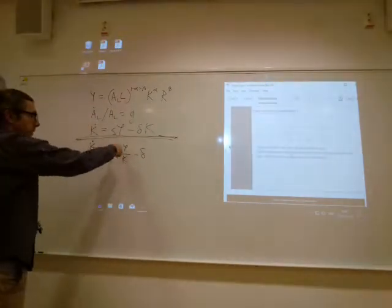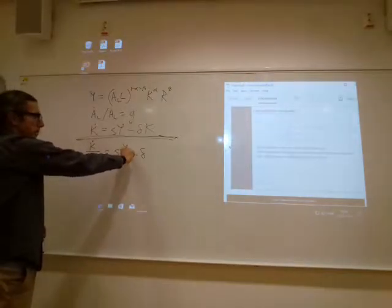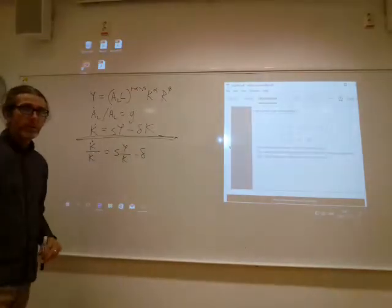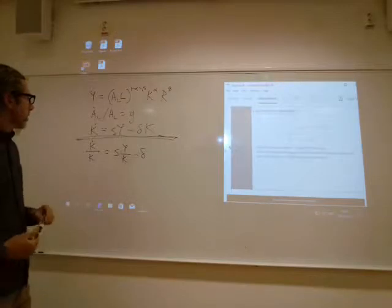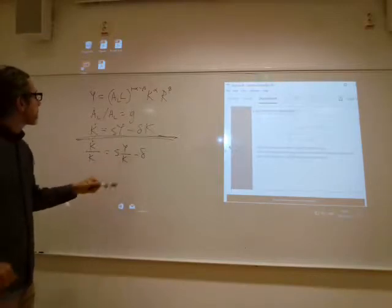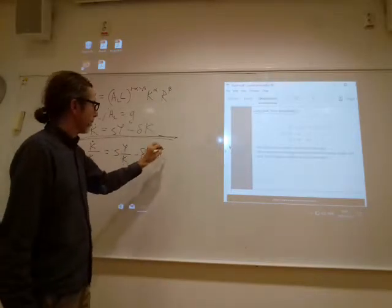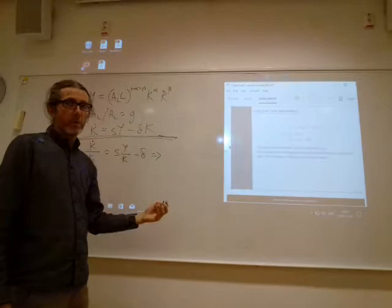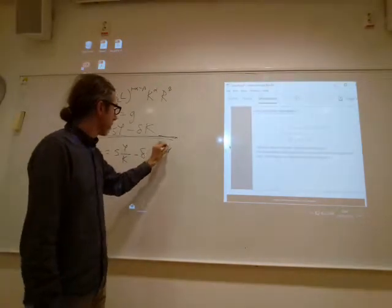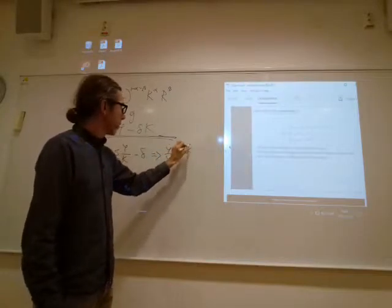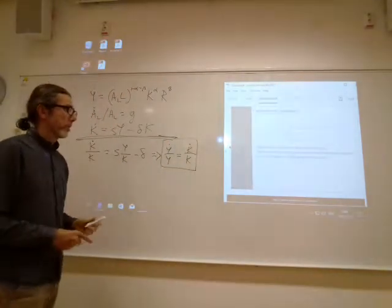So which means, if this whole thing is constant, delta is constant, so Y over K must also be constant. Okay. So if Y over K is constant, that means that if Y grows by 1%, K must grow by 1%, yeah?